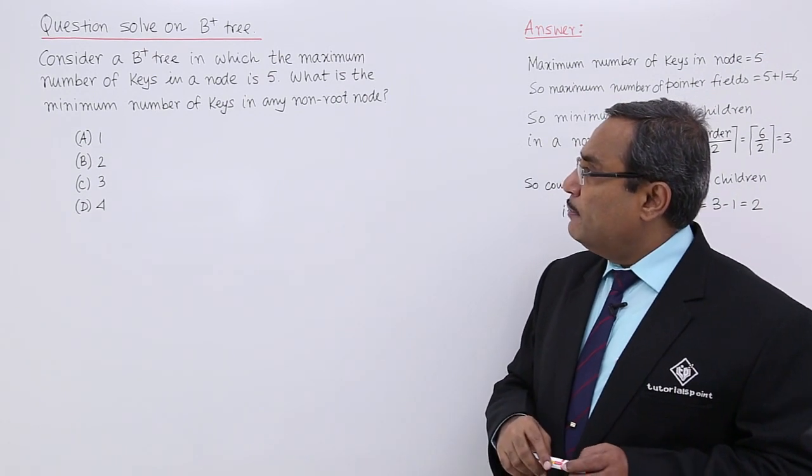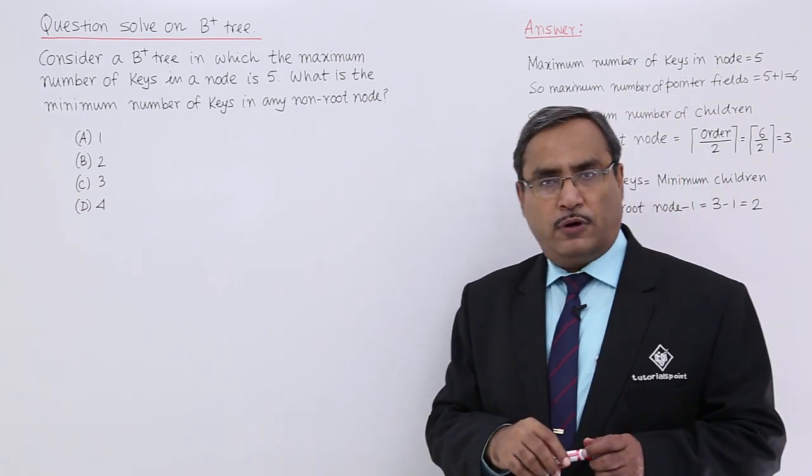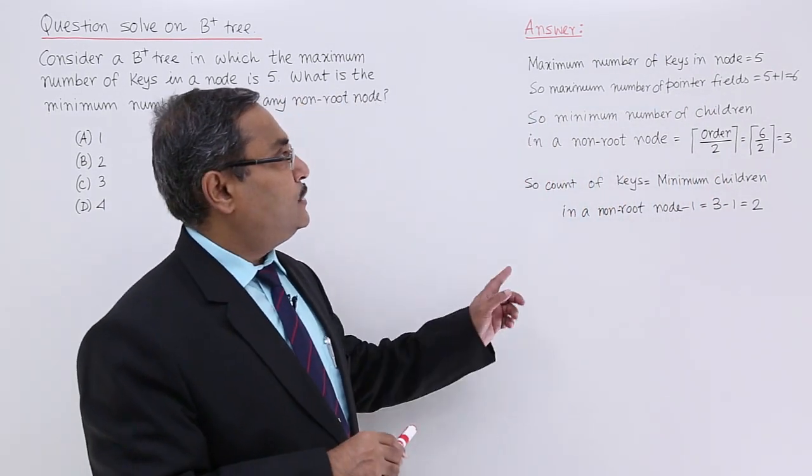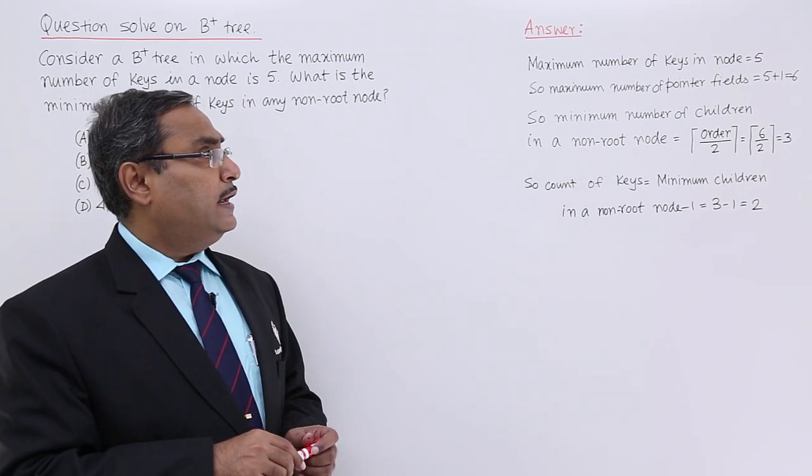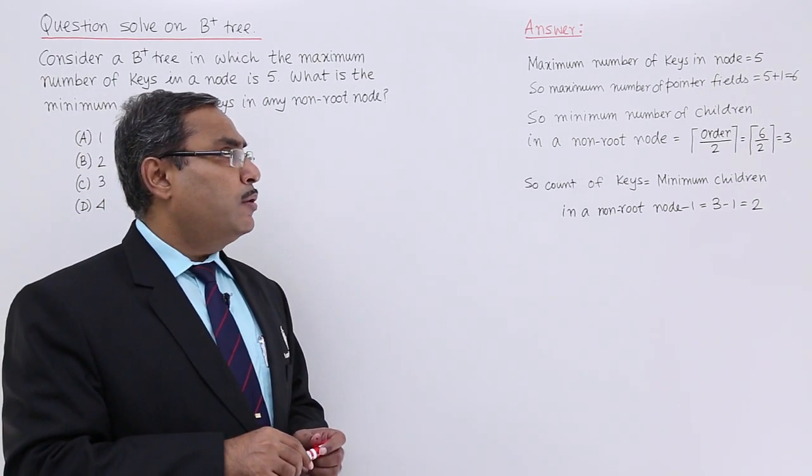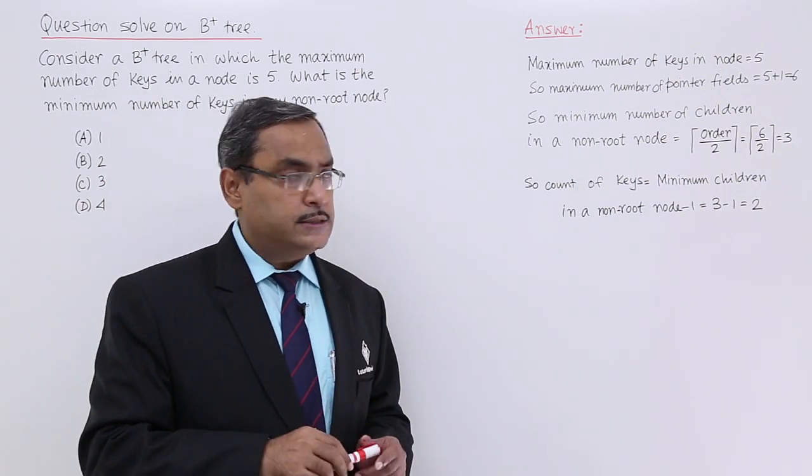What is the minimum number of keys in any non-root node? That is the question for us. Let us go for the explanation. Maximum number of keys in a node is equal to 5. So, maximum number of pointer fields is equal to 5 plus 1 is equal to 6, which we have discussed earlier.